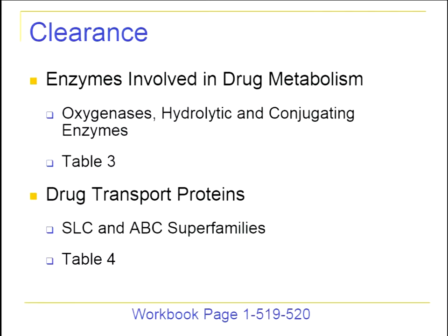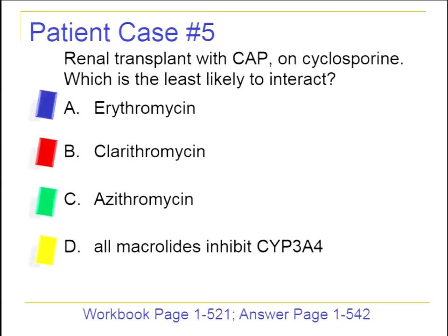Now we'll talk about CYP enzymes. Patient case five on page 521: a renal transplant patient with community-acquired pneumonia is receiving cyclosporine. Which macrolide is least likely to interact with cyclosporine? Options: erythromycin, clarithromycin, azithromycin, or all macrolides inhibit CYP3A4 equally.